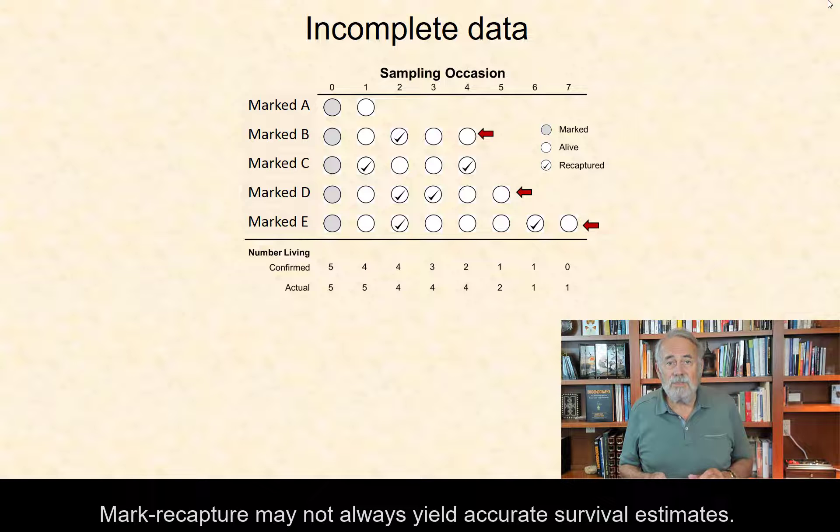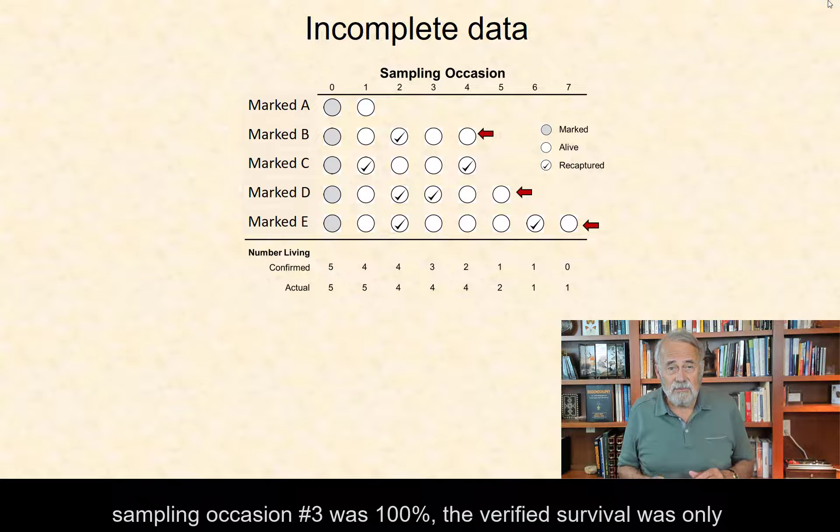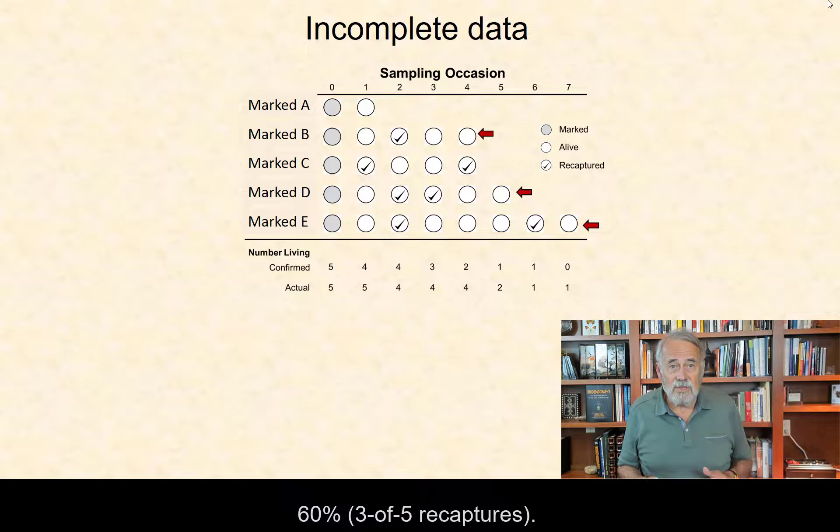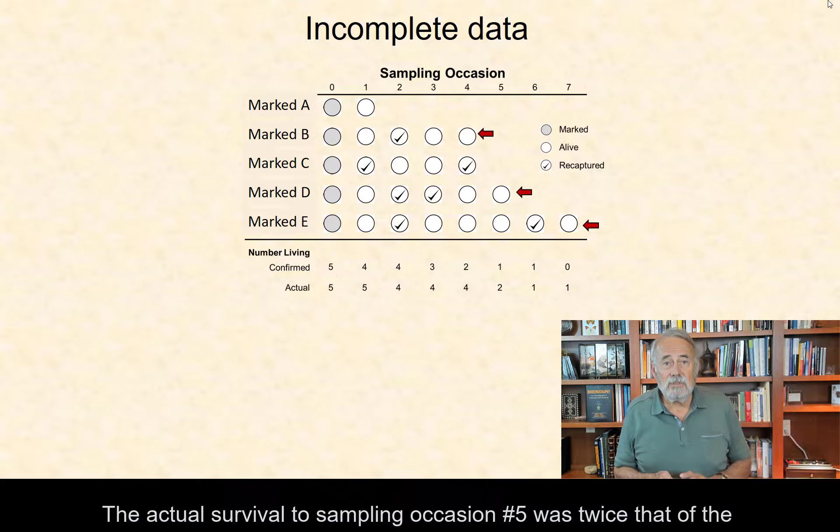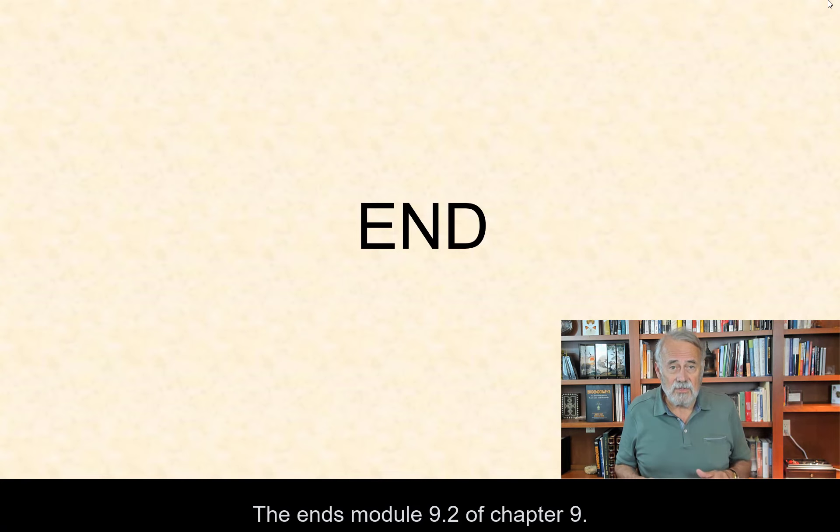Mark-recapture may not always yield accurate survival estimates. For example, for the data in this figure, whereas actual survival to sampling occasion number 3 was 100%, the verified survival was only 60%, three of five recaptures. The actual survival to sampling occasion number 5 was twice that of the verified survival. This ends Module 9.2 of Chapter 9.